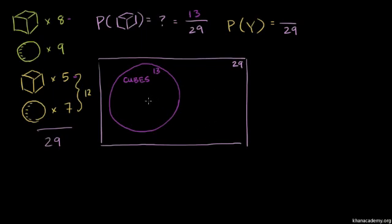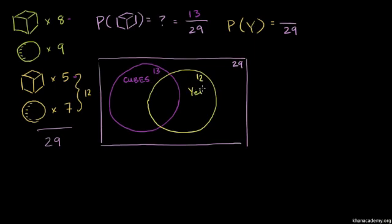There are 29 objects total, so the denominator is 29. The probability of getting a yellow object is 5 plus 7, which equals 12. So P(yellow) = 12/29.